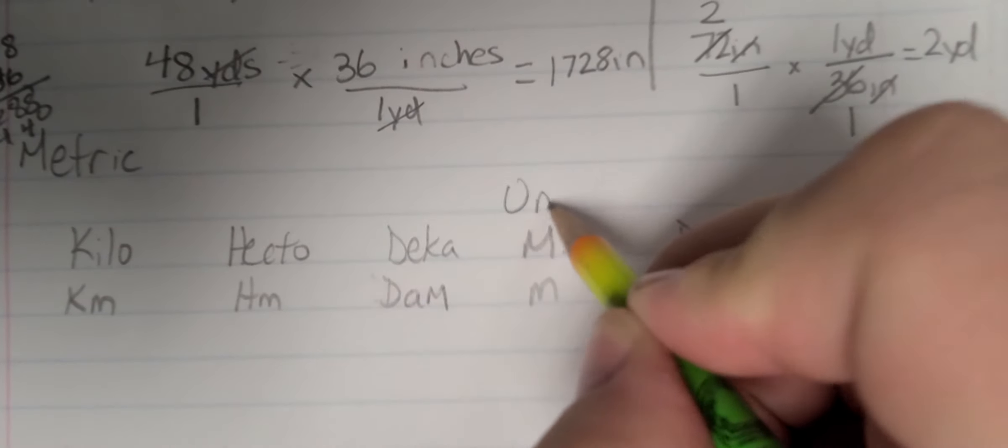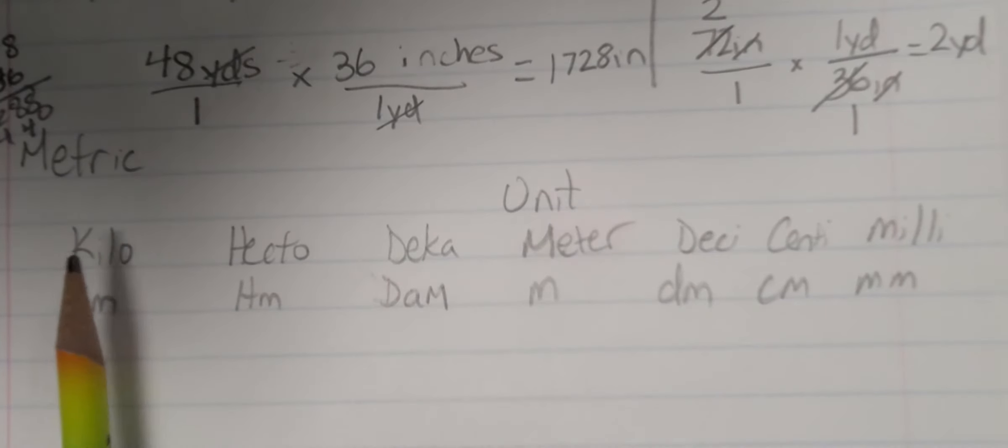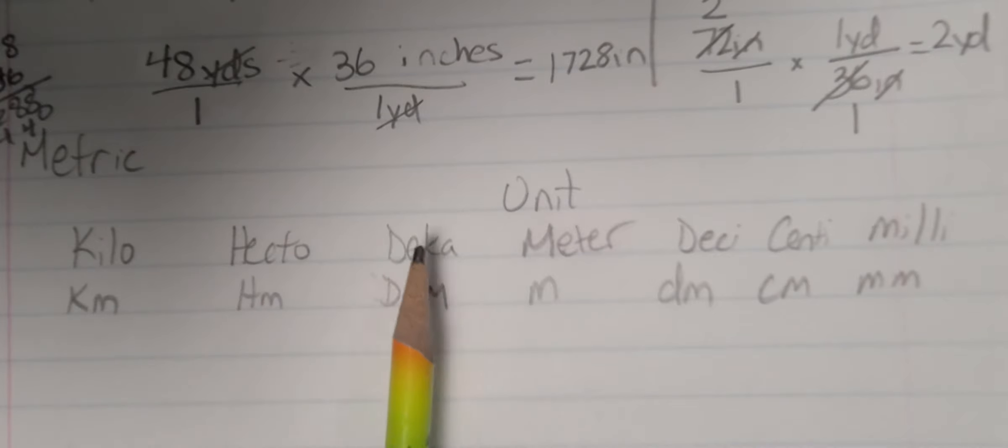So here we have our unit. Now, in this case, it's going to be a meter. So we have kilometer, hectometer, decameter, meter, decimeter, centimeter, and millimeter.